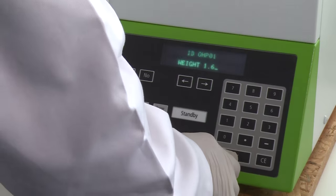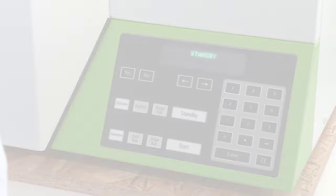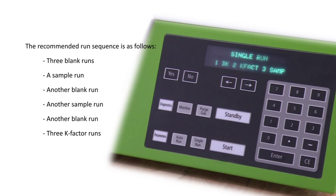The recommended run sequence is as follows: three blank runs, a sample run, another blank run, another sample run, another blank run, then three k-factor runs.